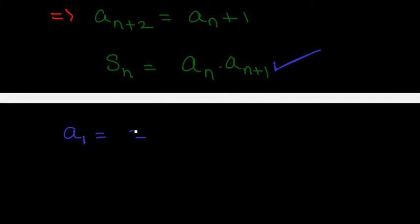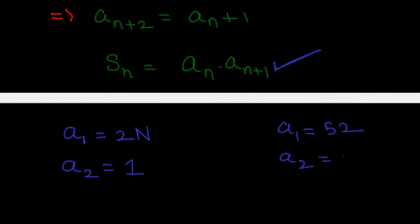Consider the case a1 equals 52 and a2 equals 1. Then a3 must divide 52 plus 1 equals 53. But 53 is a prime number, so a3 would have to be 53, but elements cannot exceed 52. Therefore this is not possible. So a2 equals 1 may not work in all cases.